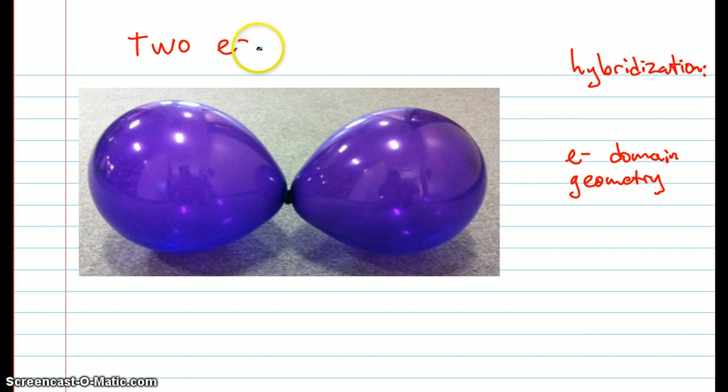Our simplest case is when we have two electron domains to worry about. Here you can see these two balloons are orienting in space so that when you draw in the bonds, the bond angle between them is 180 degrees. So this angle right here is 180 degrees. We call this kind of hybridization SP hybridization, and the electron domain geometry is linear.